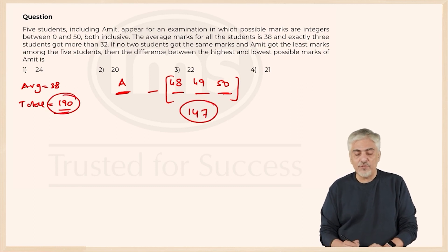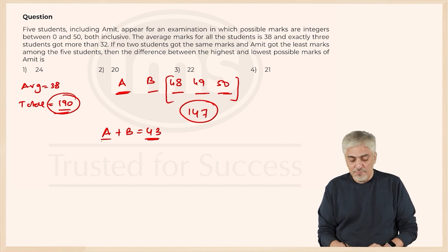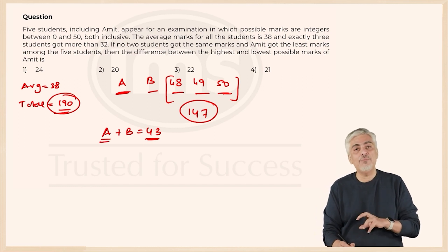So the total of these 3 will become 147. So out of the required 190, 147 is already done, which means how much is left - 43 more is there. Let us call this guy as B. So A plus B still need 43. Now, if I want to minimize A, if I want to make A minimum, B has to be as large as possible.